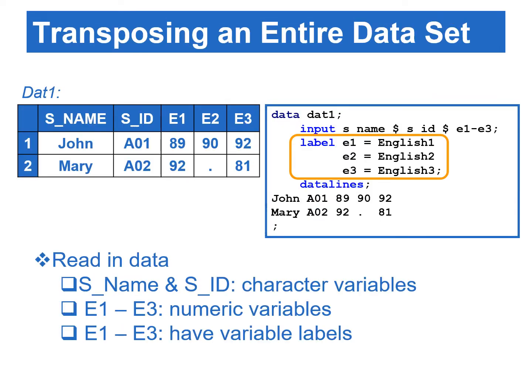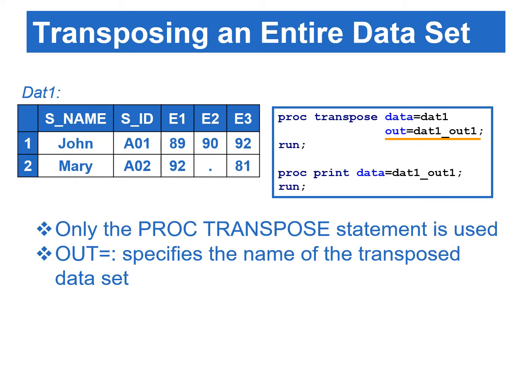Let's start with an example for transposing the entire data set. We will use DAT1 as an example. The program starts with reading this data set from the data lines. Notice that variables E1, E2, and E3 are being labeled in the data step. In this example, only the OUT= option is used in the PROC TRANSPOSE statement.